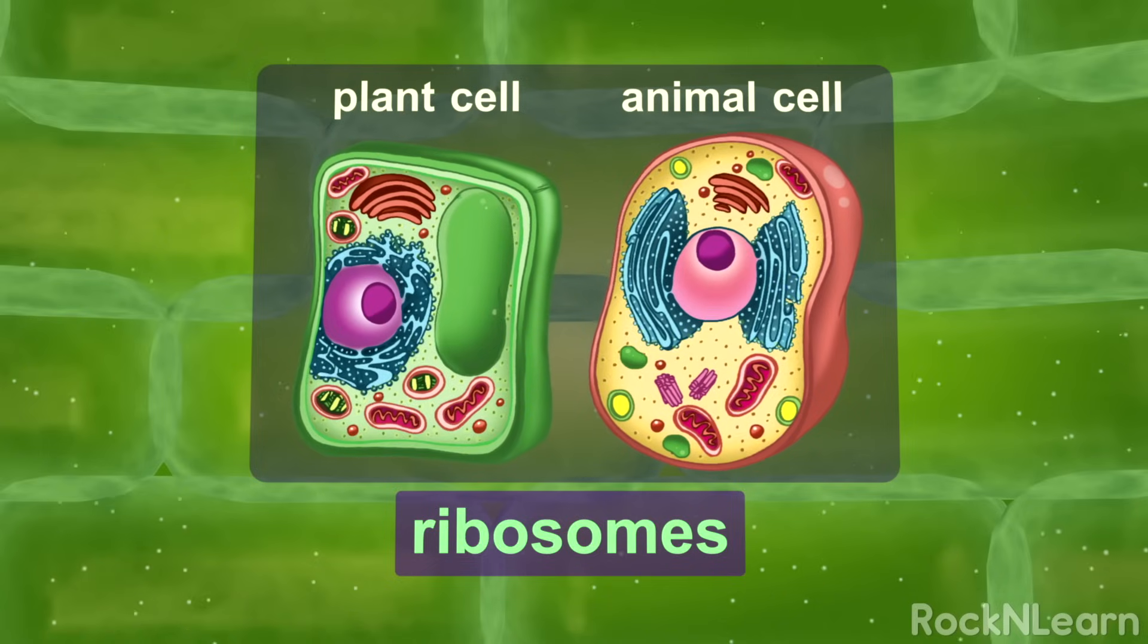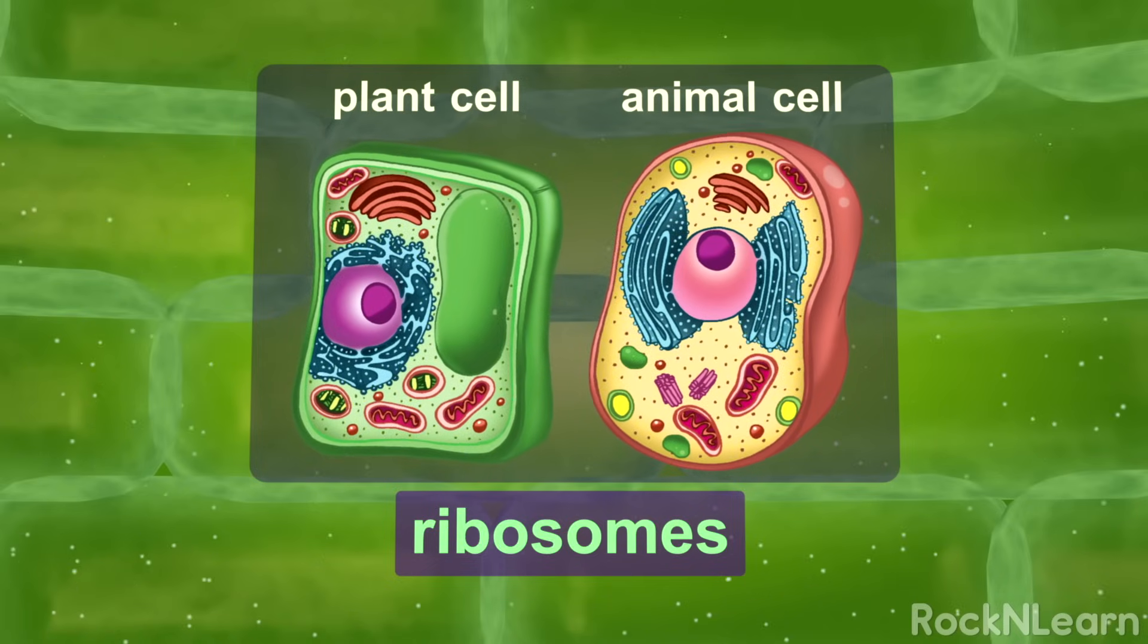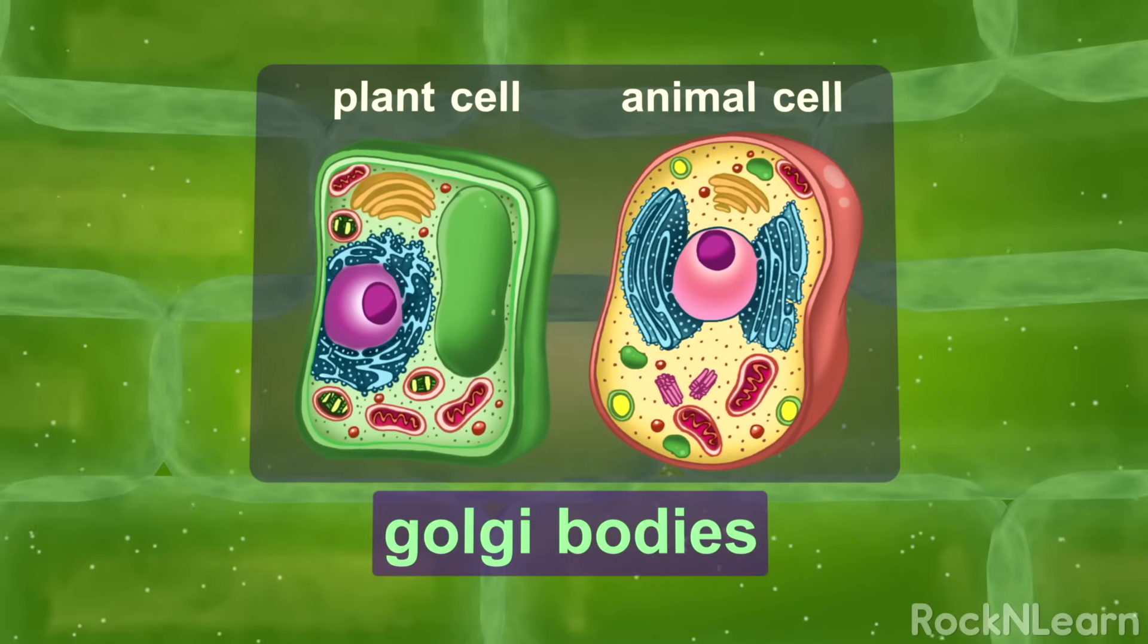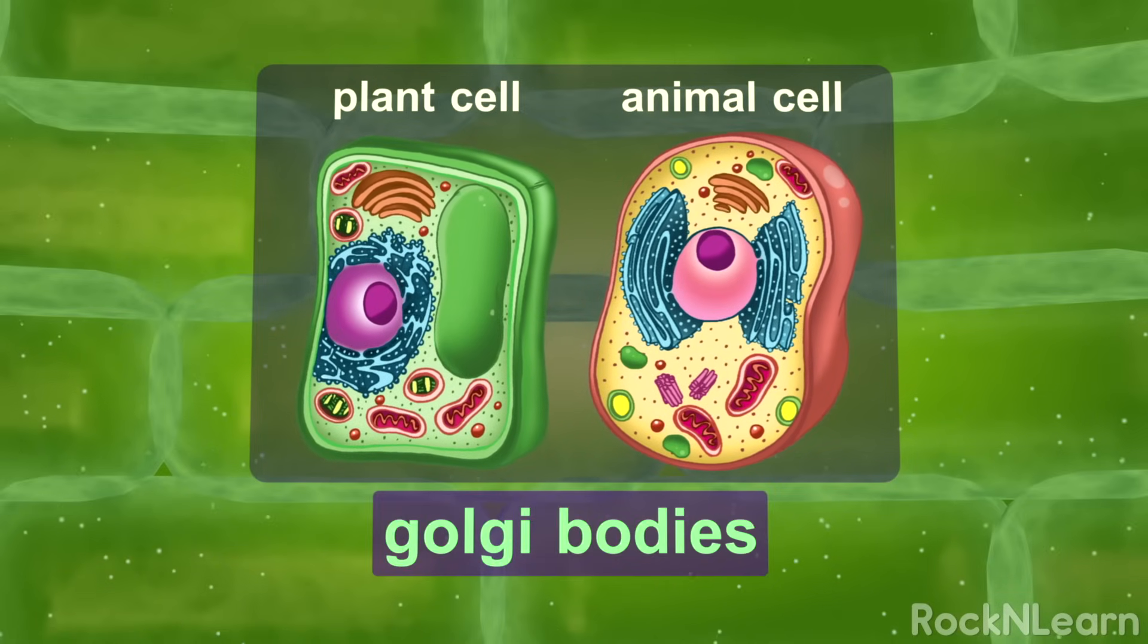Both plant and animal cells have ribosomes. Ribosomes are important because they help put proteins together. The Golgi bodies take the proteins that the ribosomes make and package them so they are easier to move.